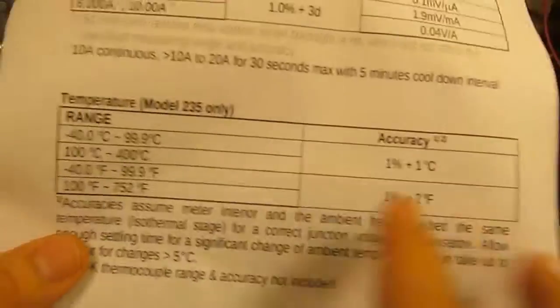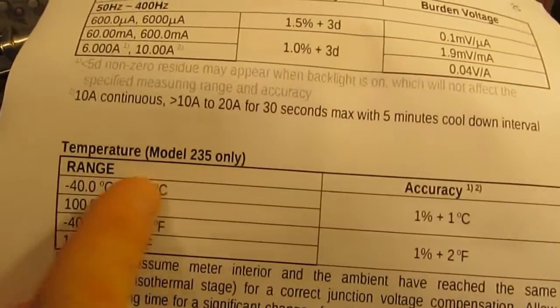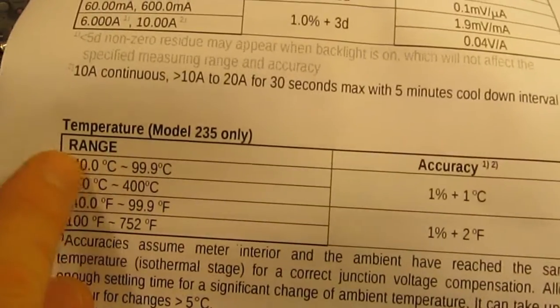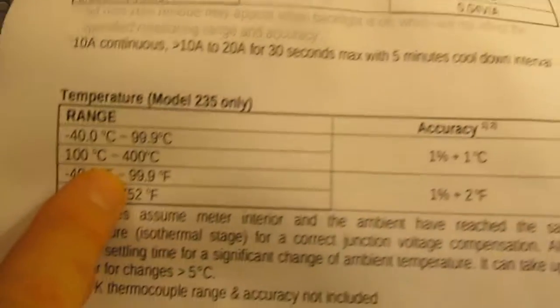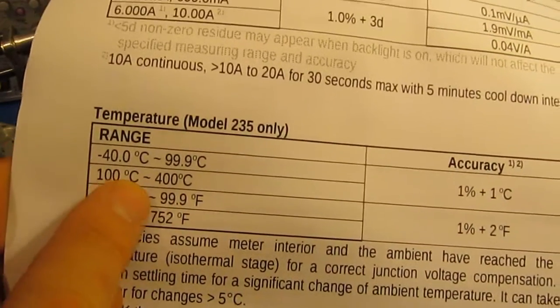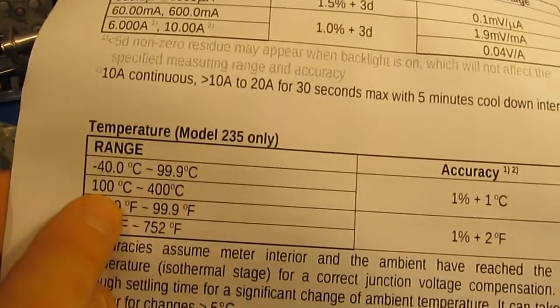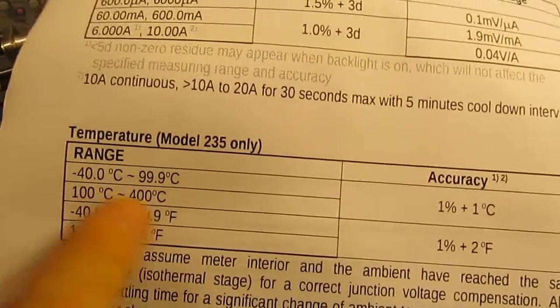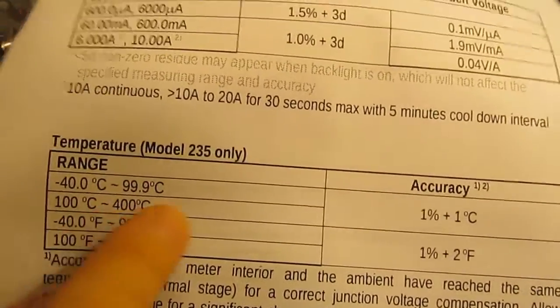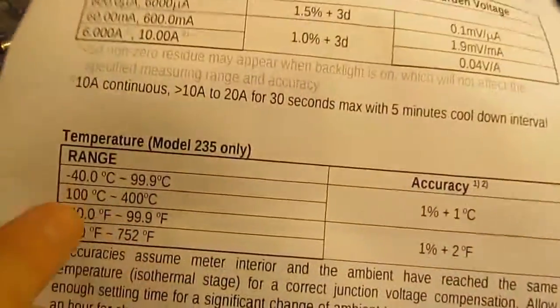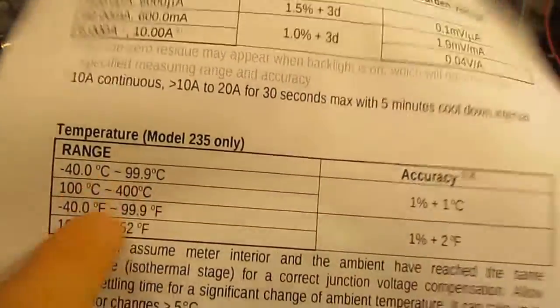Okay, so let's take a look. This is the manual that comes with the BM 235, and if we look at the temperature range we can see its maximum range is 400 degrees C. So I'm not quite sure how our member decided he can read 500 C with this.